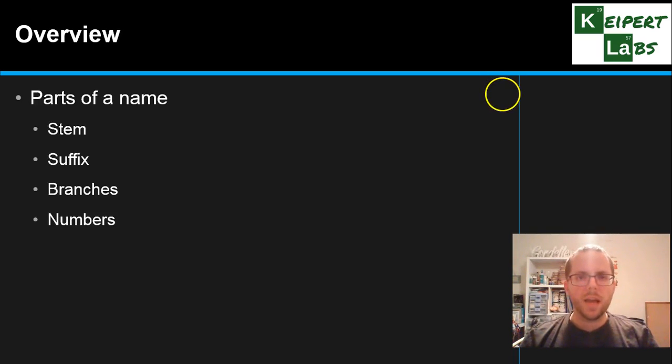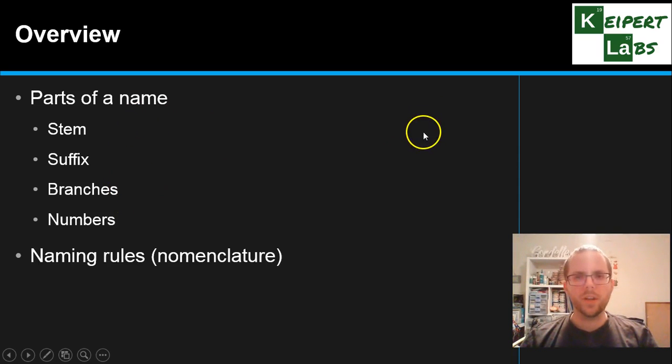Okay, so let's begin with an overview. So we're going to talk about the parts of the name that we give to a hydrocarbon. We'll look at stem, suffix, branches and numbers. We're going to look at the naming rules and process that we can follow called nomenclature to help to come up with that unique name. And then also go over some worked examples to help us to really apply those rules.